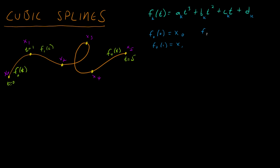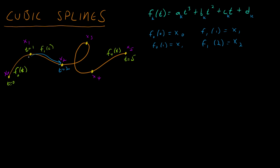The next section, f₁, at time one should be x₁, and at time two it should be at x₂. We're going to get a lot of constraints this way — one for each endpoint of each piecewise section. This gives us 10 constraints total.